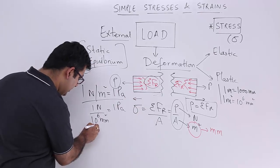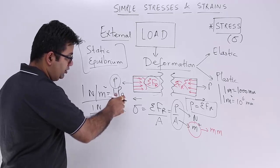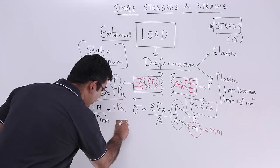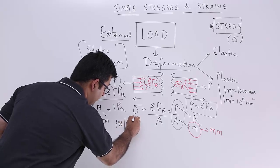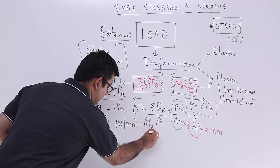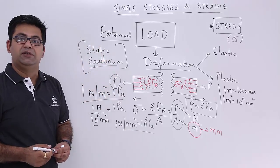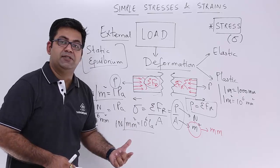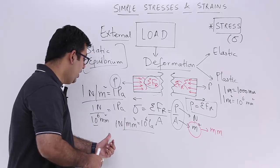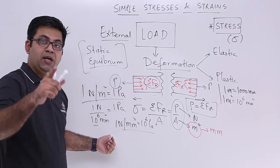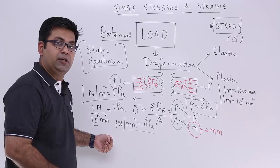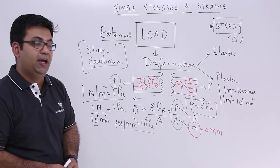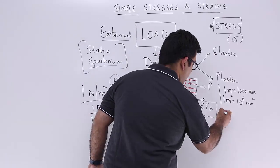Bringing 10⁶ to the right-hand side gives: 1 N/mm² = 10⁶ Pascal. Now, 10⁶ of anything is 'mega,' so 10⁶ Pascal is one megapascal. Therefore, 1 newton per mm² — which is how stress is given in engineering terms — equals 1 MPa, or one megapascal.